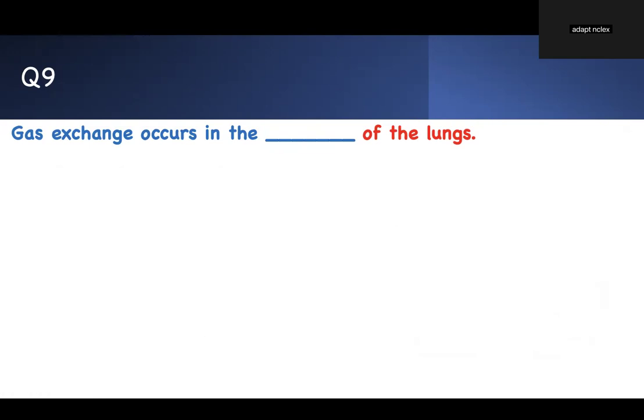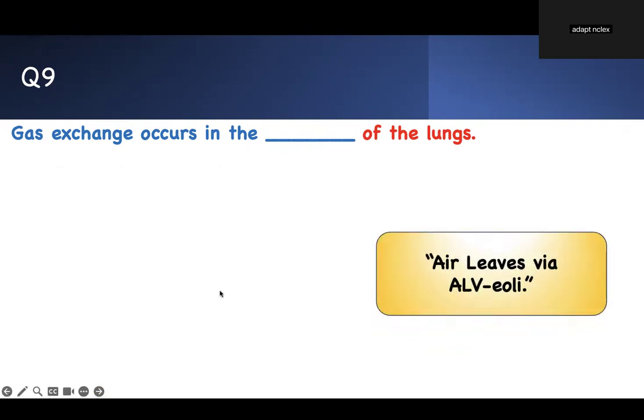Same thing. Gas exchange occurs in what? In the lung. This one, you have to provide an answer. I have a mnemonic for you. Air is where exchange occurs. So, air leaves via what? Alveoli. Alveoli. Therefore, the right answer is alveolar.